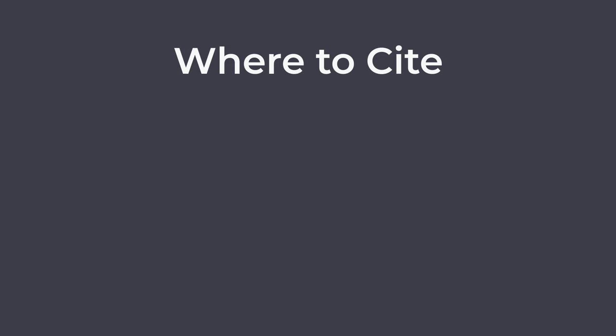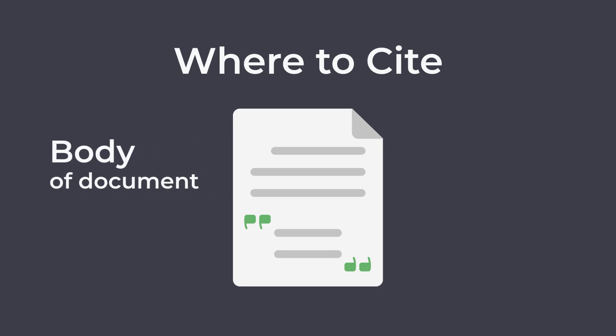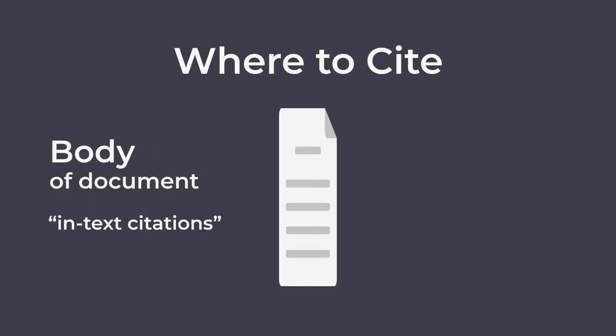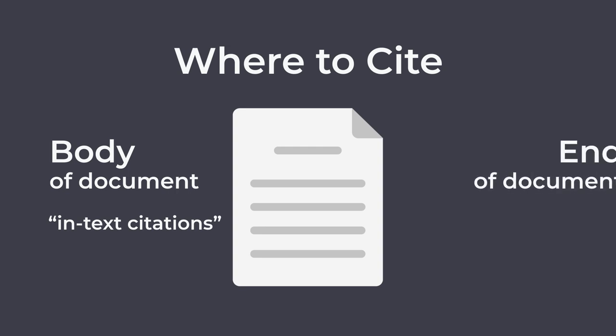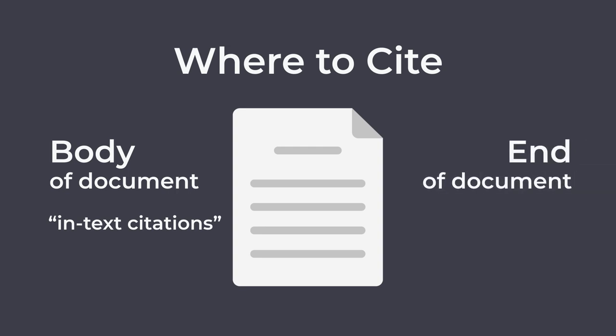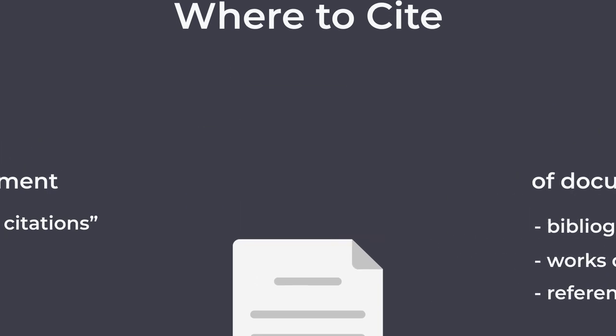Where to cite. There are two places in your paper where you need to cite your sources. You need to cite your source in the body of your document — these are called in-text citations. You also need to cite in a list of sources at the end of your paper, which can be called a bibliography, works cited list, or reference list.